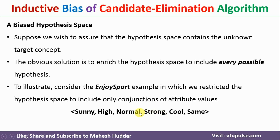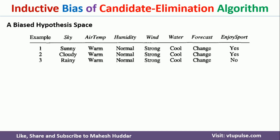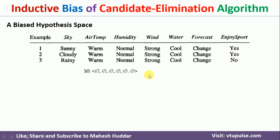If we are unable to get the target concept, such a hypothesis space is called biased. To understand how to convert it, let us work through an example. We have three training examples: the first two are positive and the last one is negative. We initialize the specific boundary to null and the generic boundary to question mark.